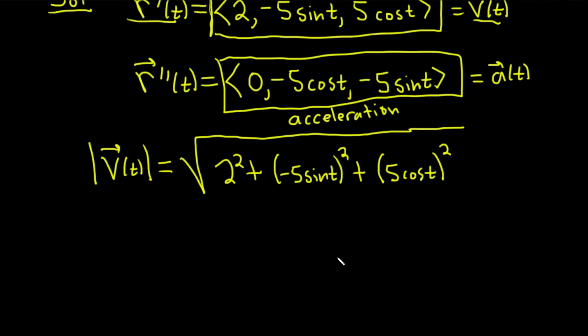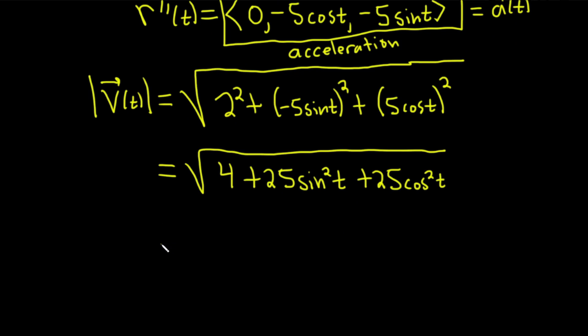Now we can clean this up. So this is equal to square root of... So 2² is 4. When you square the -5, it's just going to become a 25. And then we have sin²(t). Same thing here. It'll be 25cos²(t). Something is going to happen in this problem that happens in a lot of other problems. So I'm going to show all the steps here. This is actually 4 plus... Now you can pull out a 25 here. So this is actually sin²(t) + cos²(t).